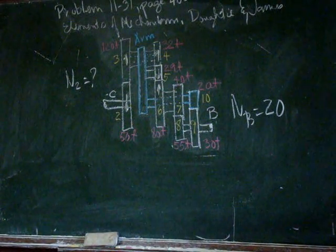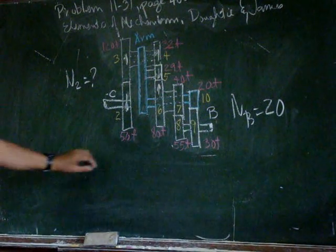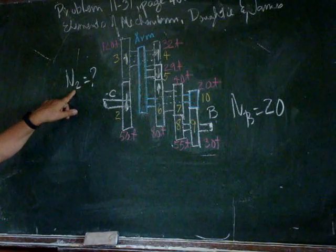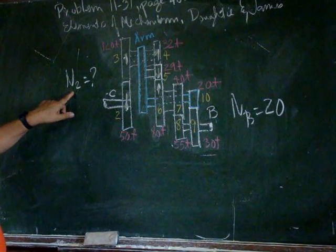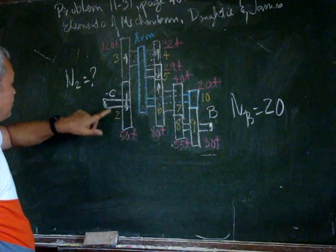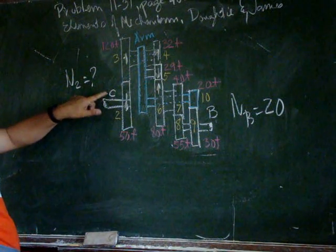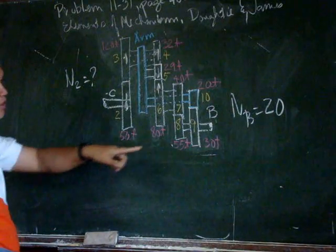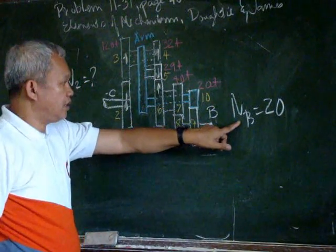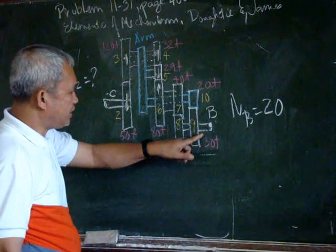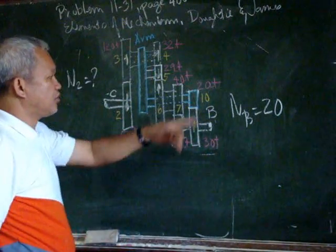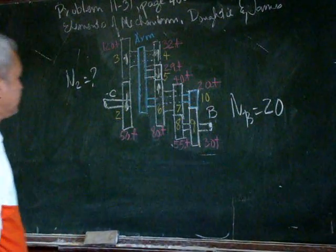In this particular problem, we have to determine the rotation of gear number 2, or shaft C, given the rotation of shaft B is 20 revolutions per minute.